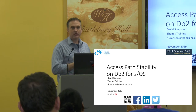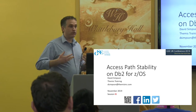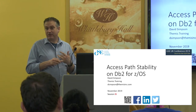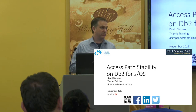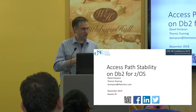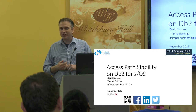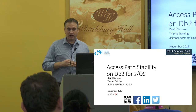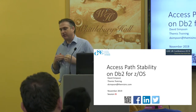I'm here to talk about access path stability. IBM in DB2 has given us several different tools for stability in the last few releases. One of them that I'm not going to talk about is AppCompat — a parameter meant to provide stability in the functionality of your applications, so that SQL produces the same result across versions. What we're going to talk about is stability with regard to access paths or performance.